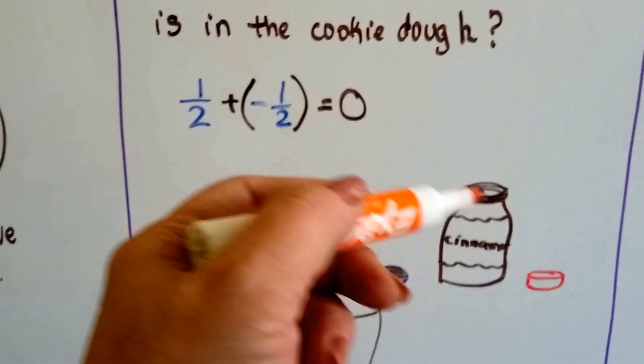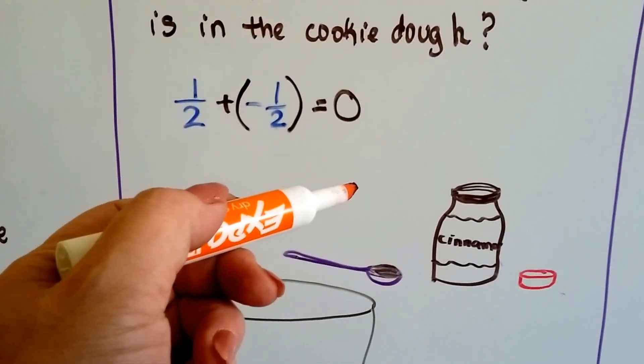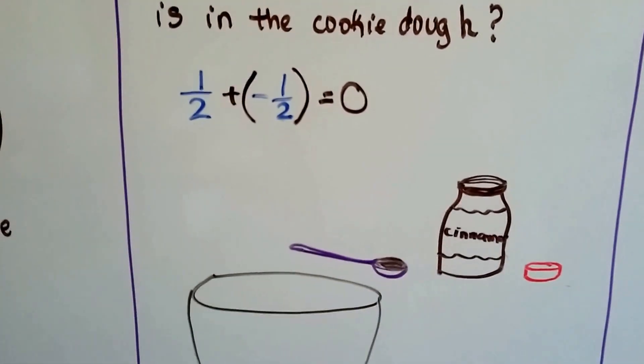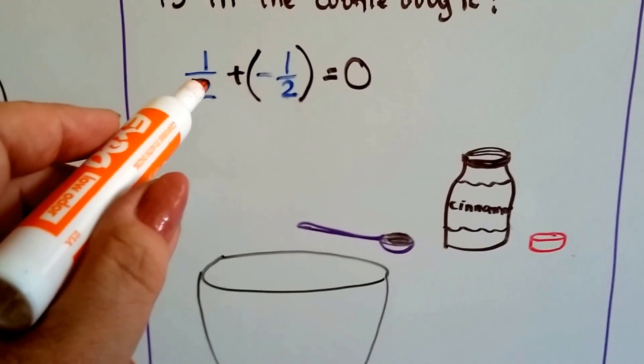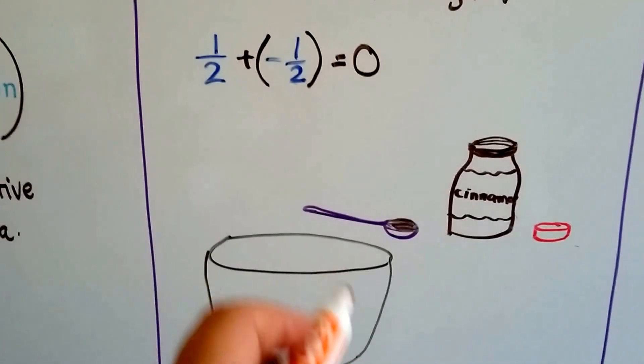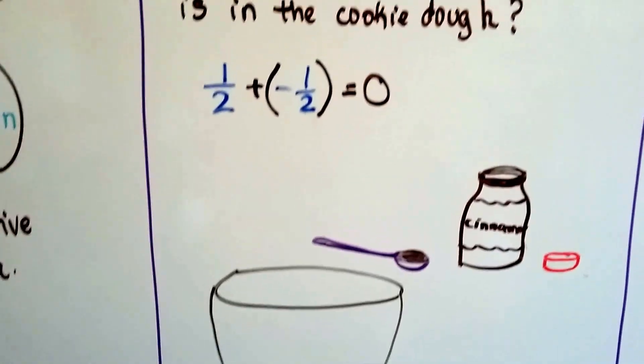She took it out of the jar and went, mm, no, I don't want to make cinnamon. So maybe she's making chocolate cookies instead and threw it back in. And so there was a half a teaspoon, and then she took it away, and there's zero. There's none in this bowl, is there? All right, let's take a look at this on a number line.